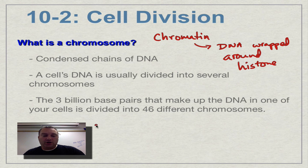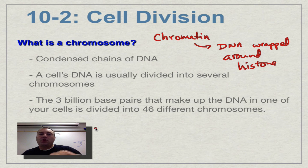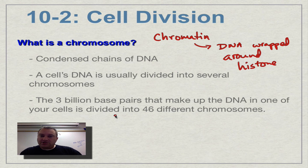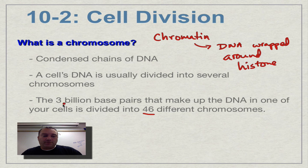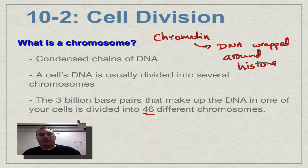In the human genome, we have 3 billion base pairs — think of a ladder with 3 billion rungs. That's too big to carry around, so it's been chopped up into smaller ladders. For humans, that's 46 different chromosomes. Instead of one great big long ladder, it's chopped into 46 smaller ones, which are easier to move around.